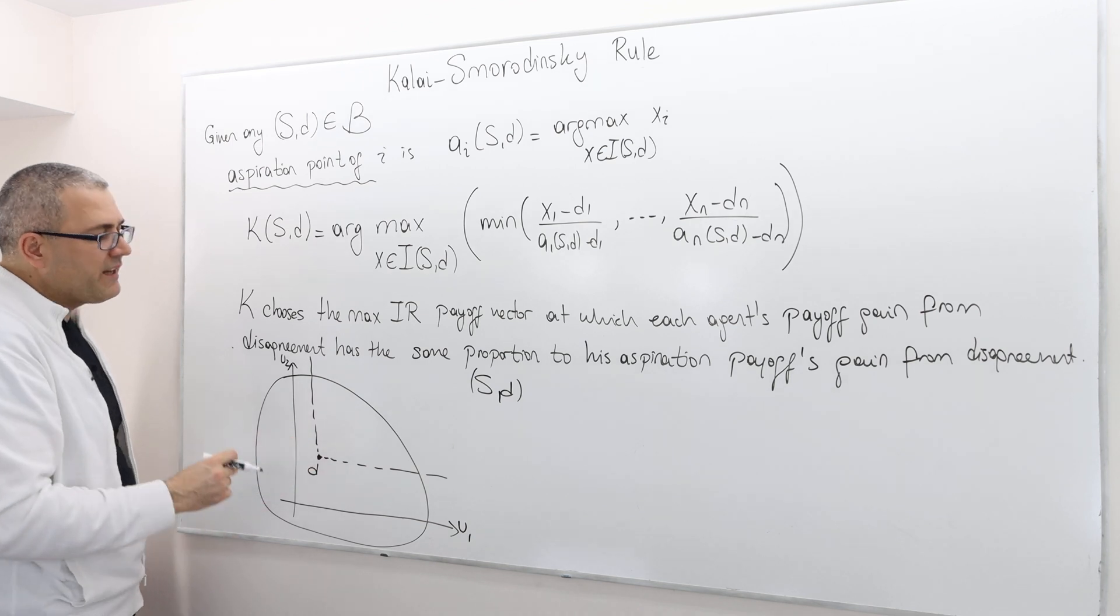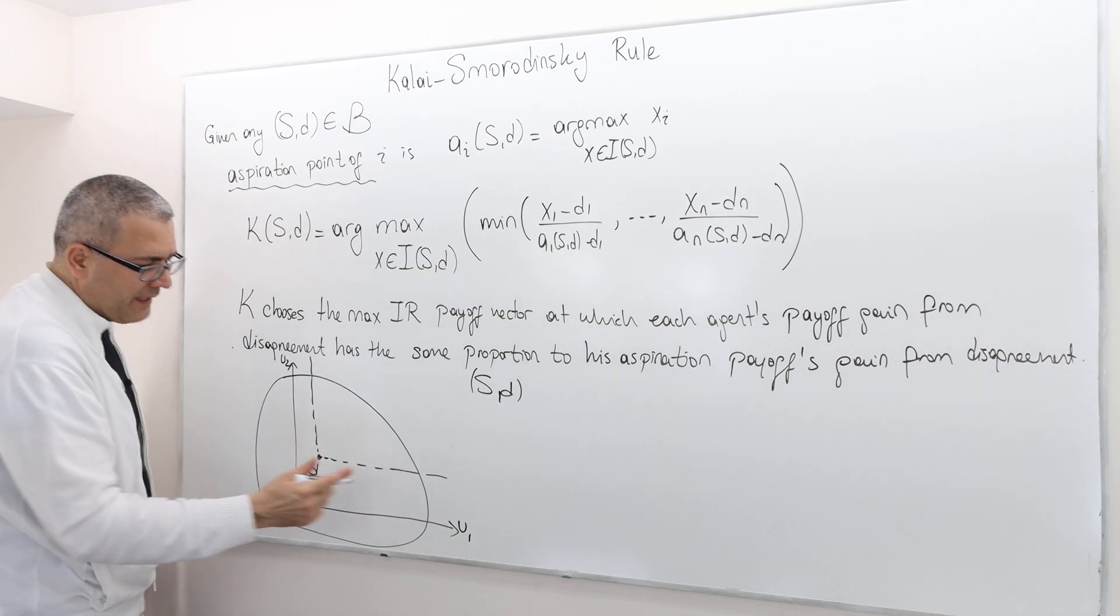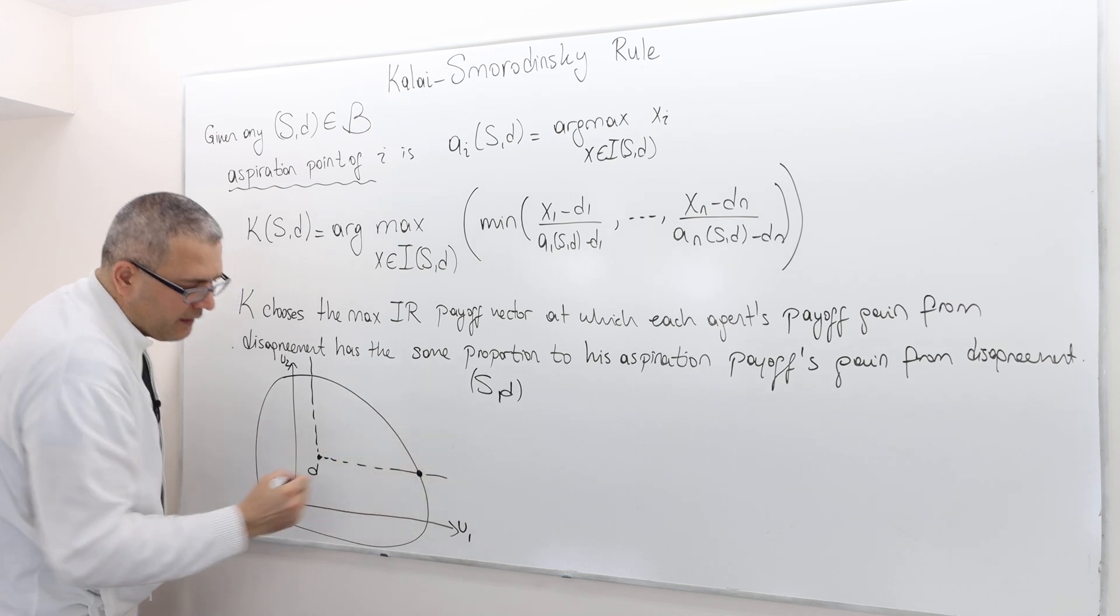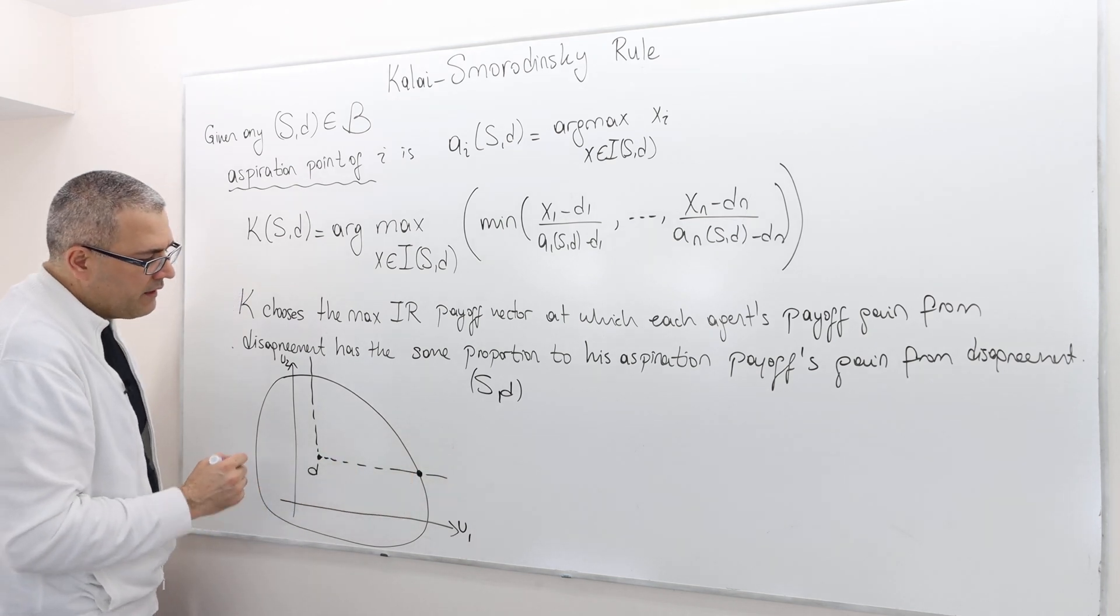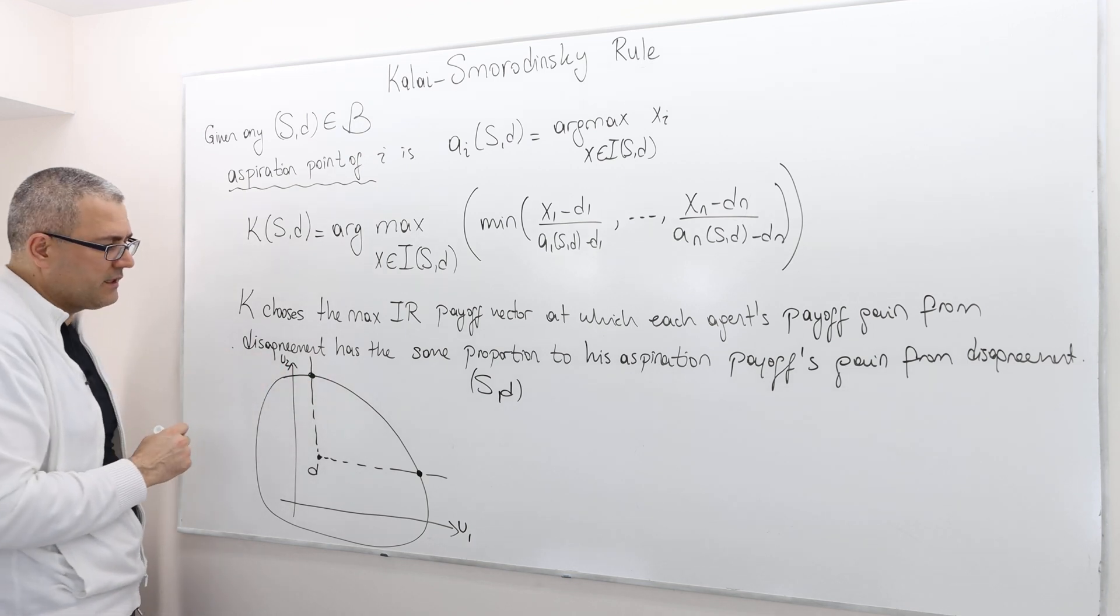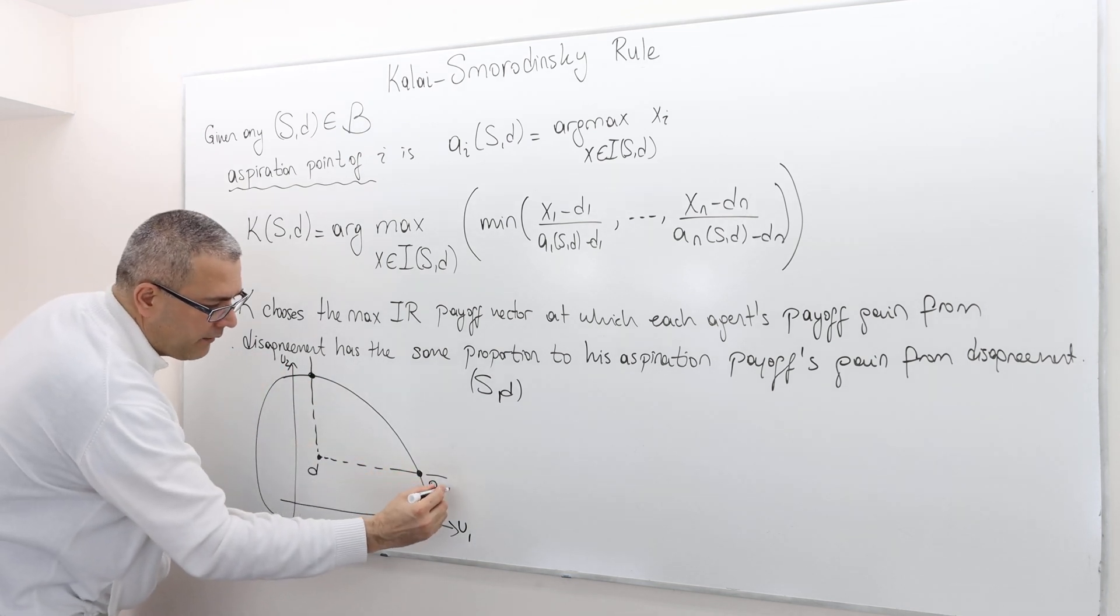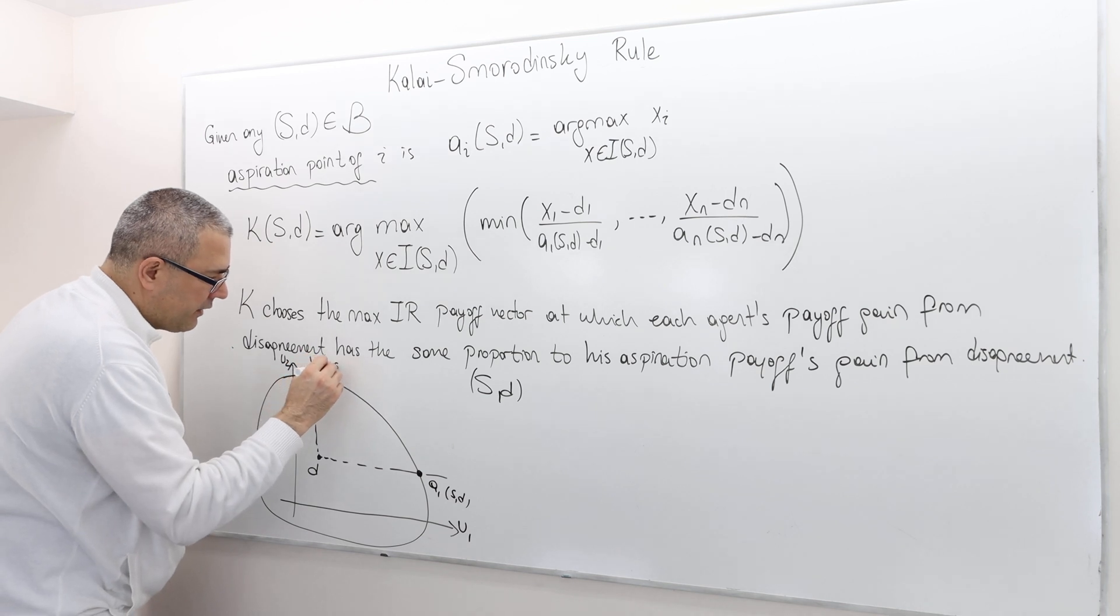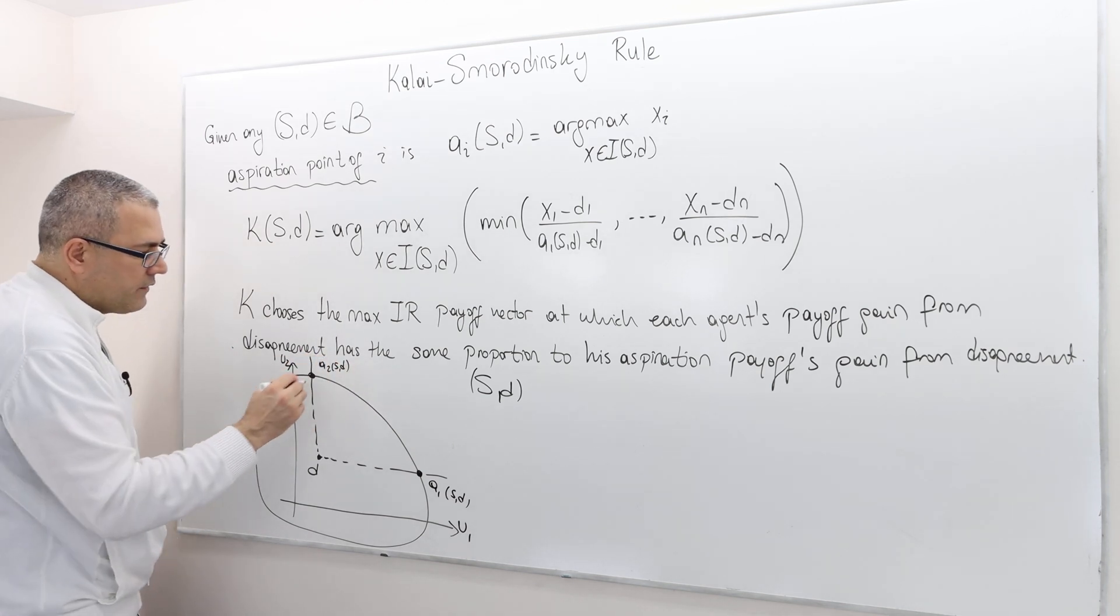Here, what is the maximum payoff player one can get? Obviously, it's this point. What is the maximum payoff player two gets? It's this point. So this is basically A1(SD) and this is A2(SD).